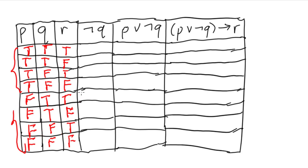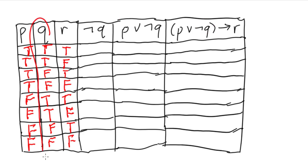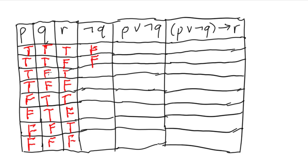Now we need the smallest component first: not q. We flip all the truth values of q. True becomes false, false becomes true. So not q gives us: false, false, true, true, false, false, true, true.